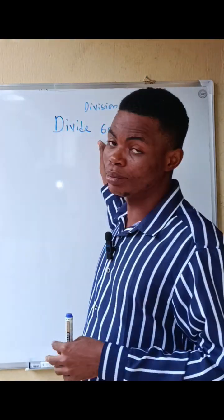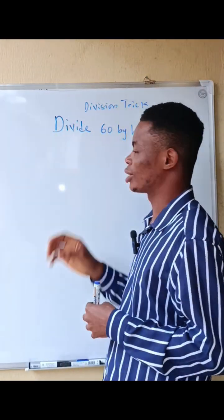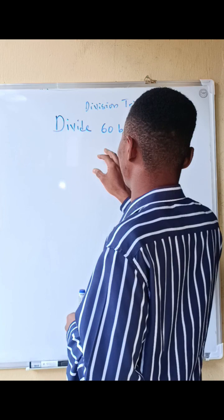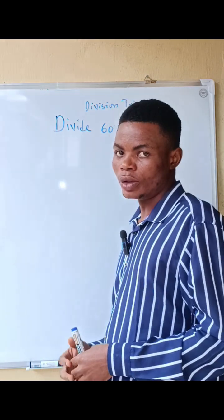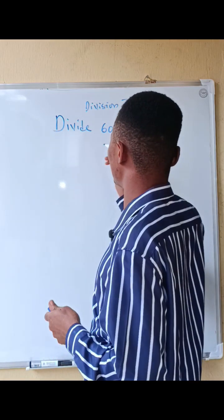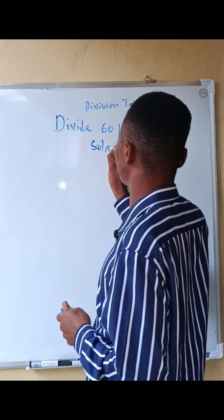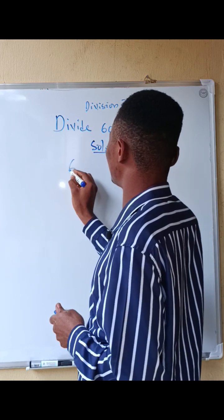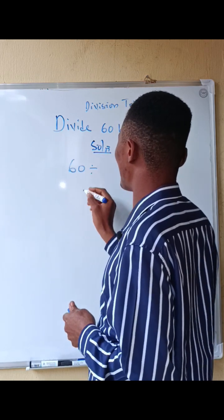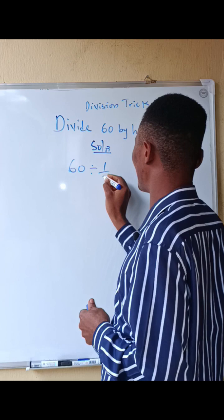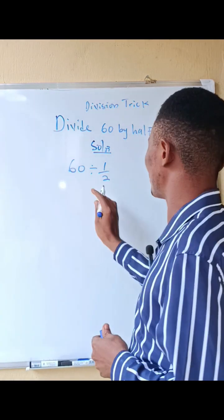Most of them are pretty simple mathematics questions. Everyone says divide 60 by half. What do we do? So in this case, the solution: we have 60 divided by half, which means 1 over 2, so we can also write this